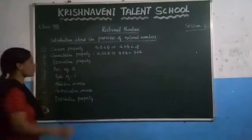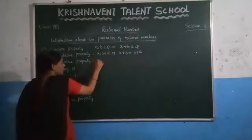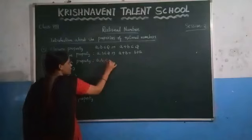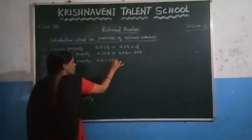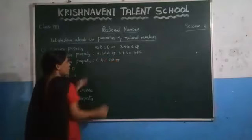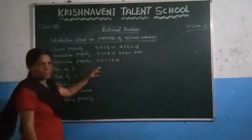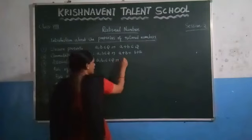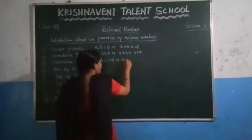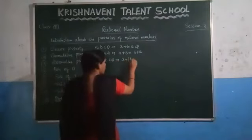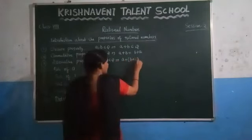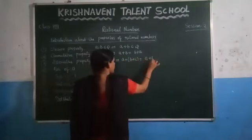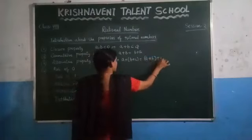The next property is the associative property. For the associative property, we need three numbers. Let us consider those rational numbers as a, b, and c. What this property says: a plus (b plus c) has to be equal to (a plus b) plus c.